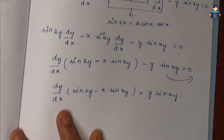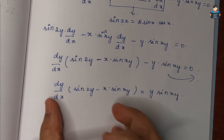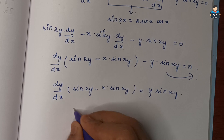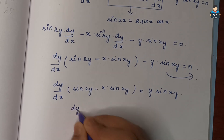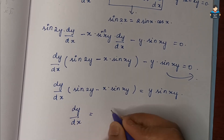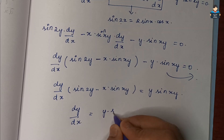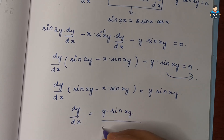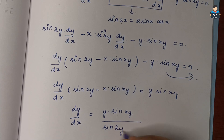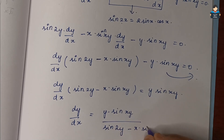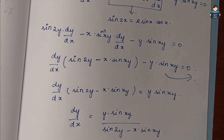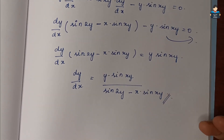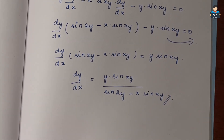As usual, dy/dx terms are on one side and the rest on the other side. So dy/dx = y · sin(xy) / (sin 2y - x · sin(xy)). This completes question number 7.